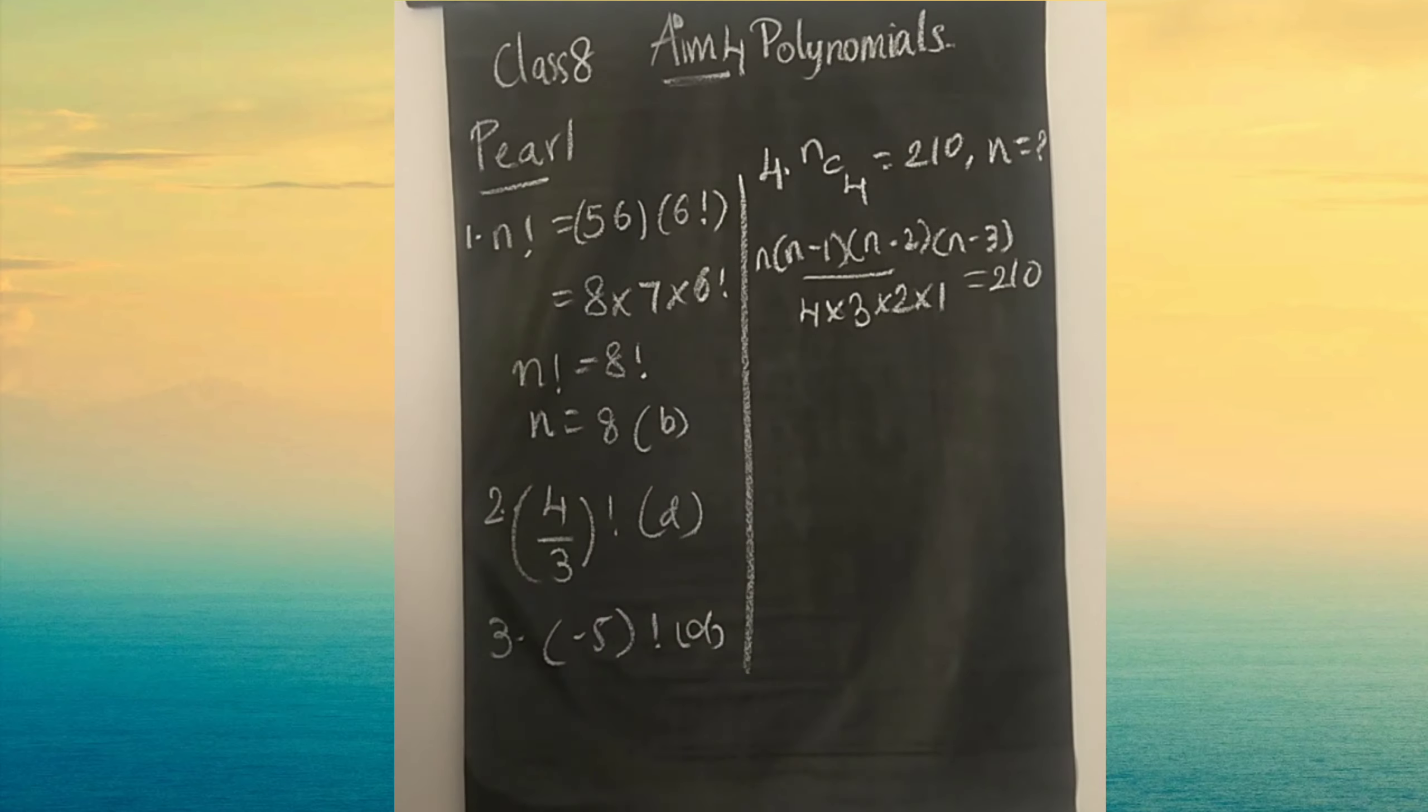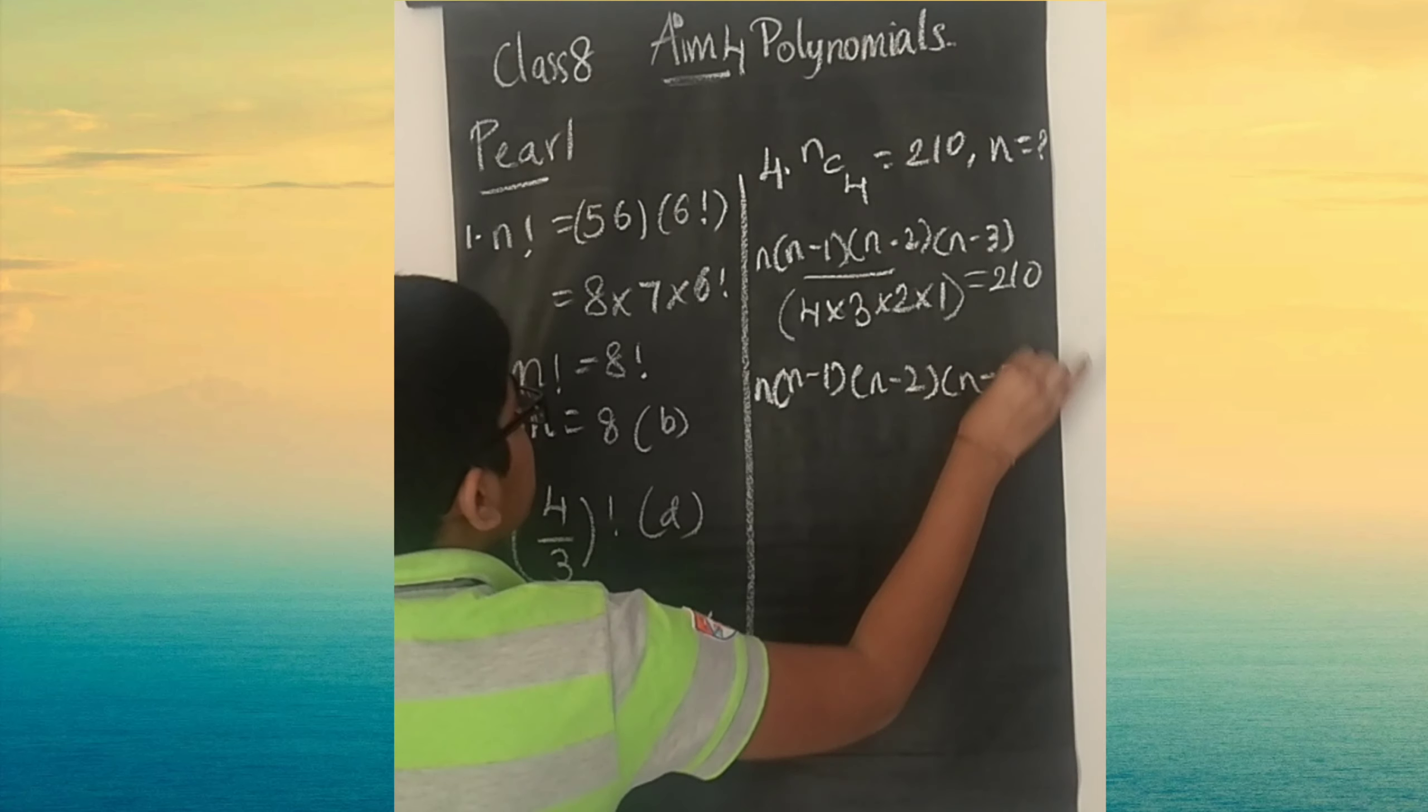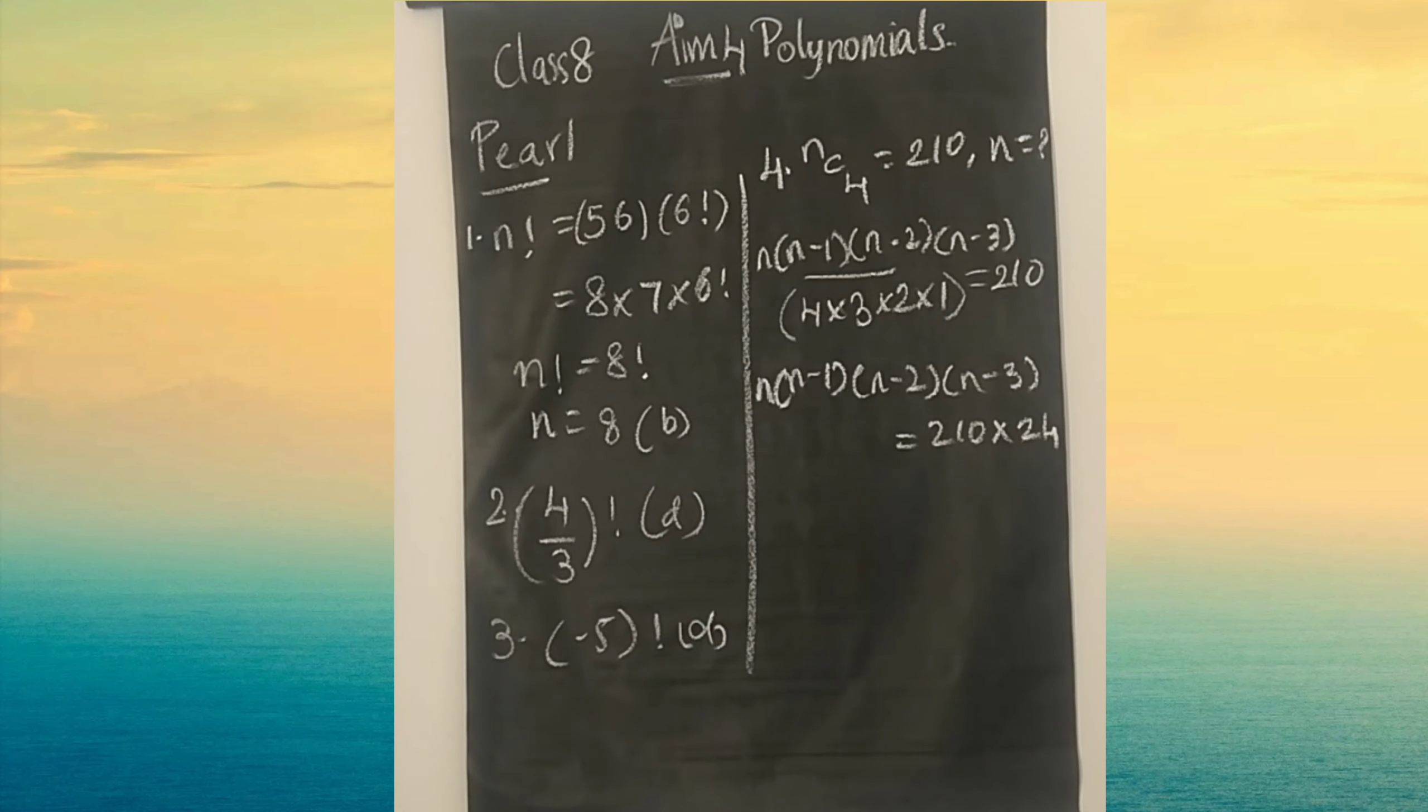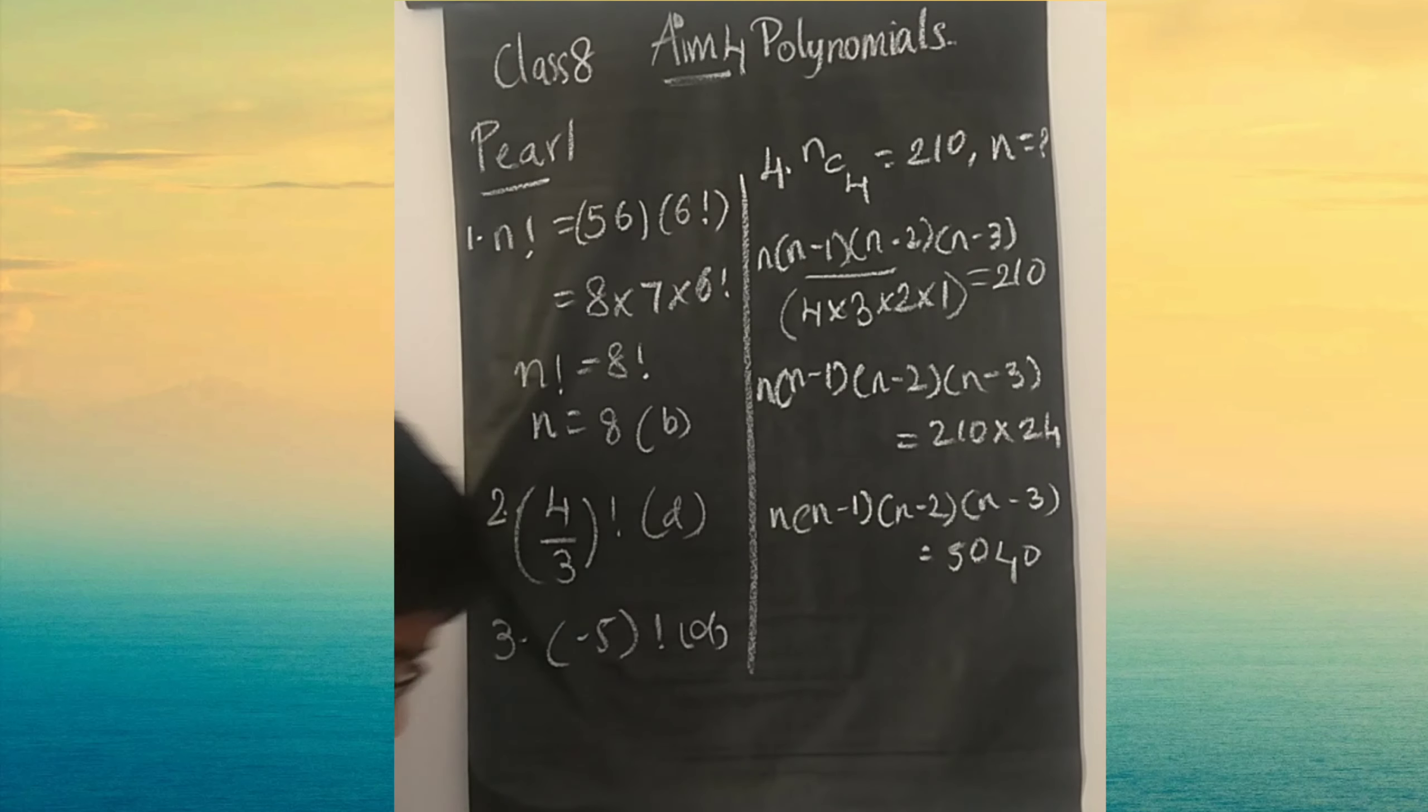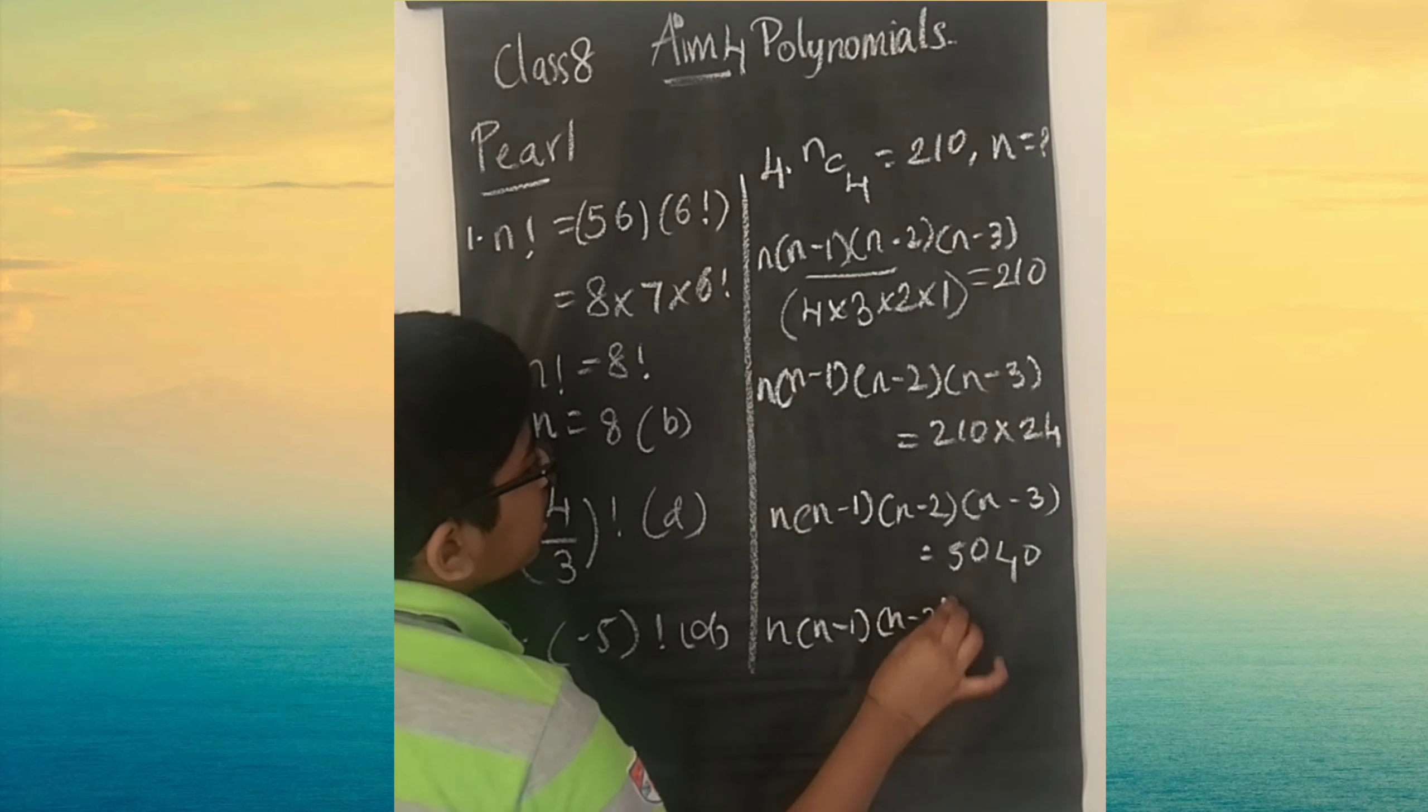We will send this to RHS. First multiply: 3 times 2 is 6, 6 times 4 is 24. So n into n minus 1 into n minus 2 into n minus 3 equals 210 into 24. When you simplify, you get 5040. Then we can split 5040.